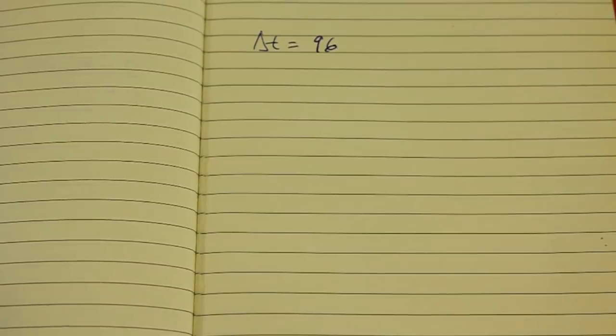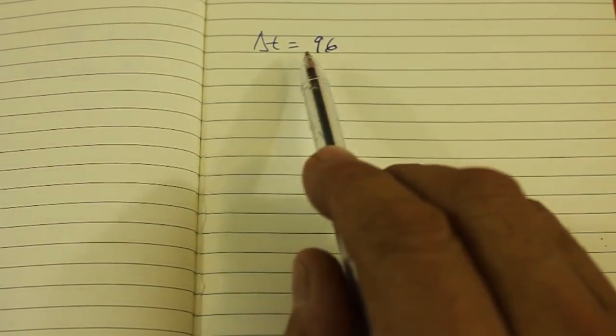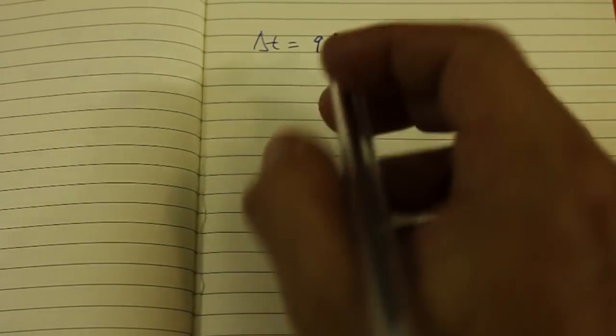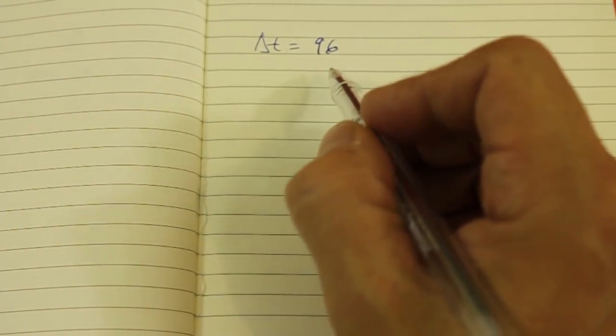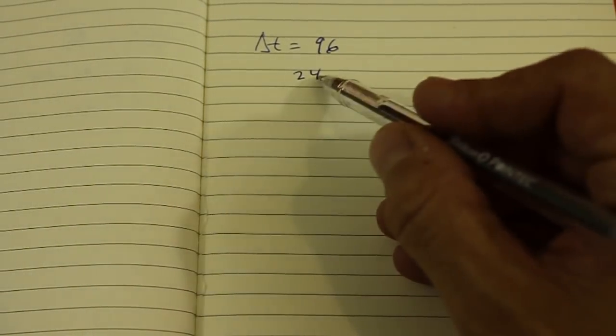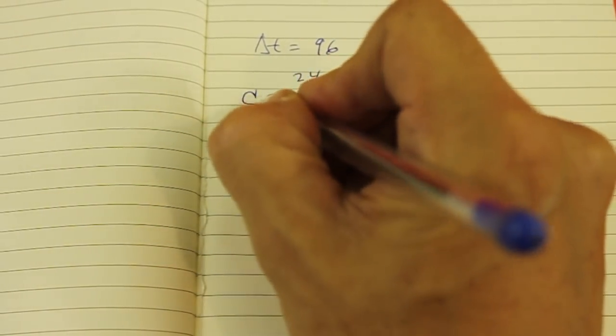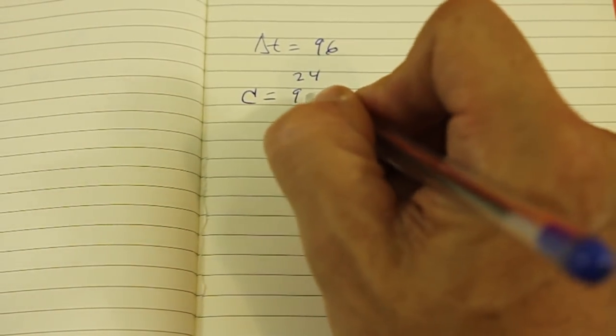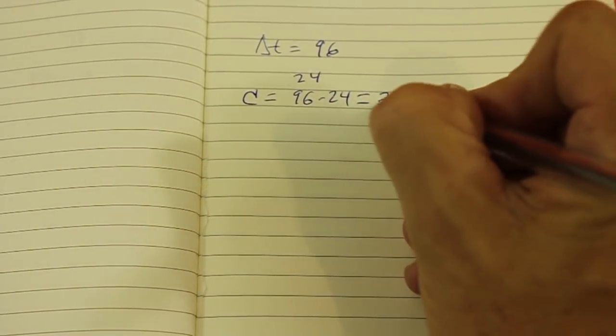This overestimation is on the order of 25% of the value that we get. So of this 96 farads, approximately 24 is lost in the internal resistance. 25% of 96. So the real capacitance must be closer to 96 minus 24 equals 72.